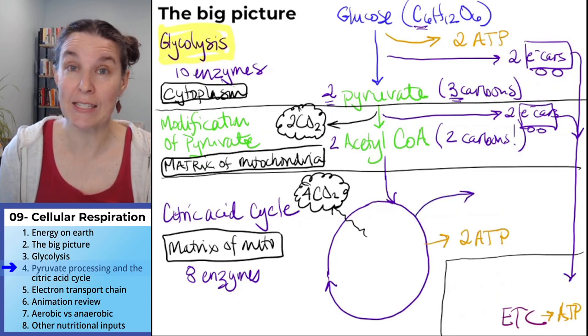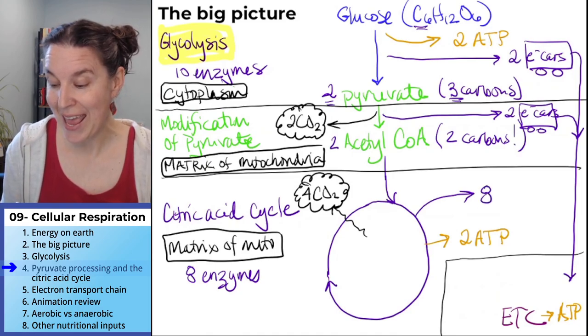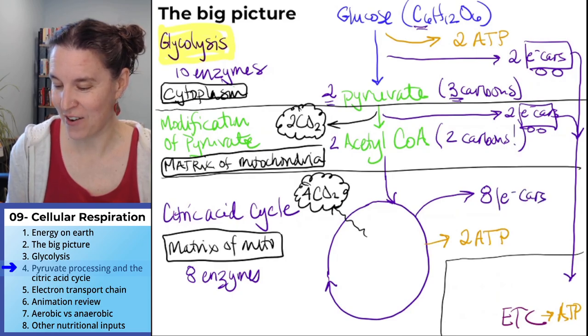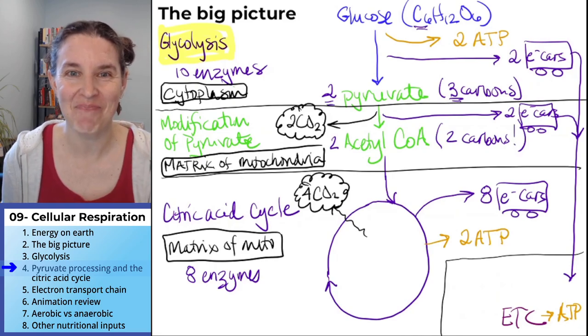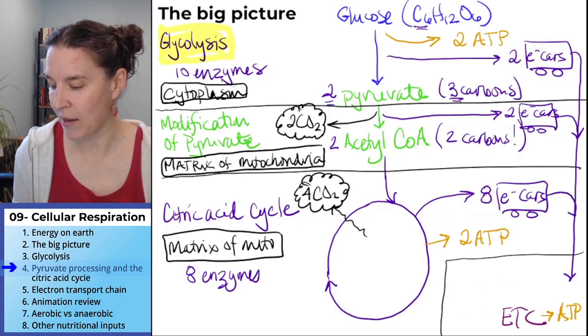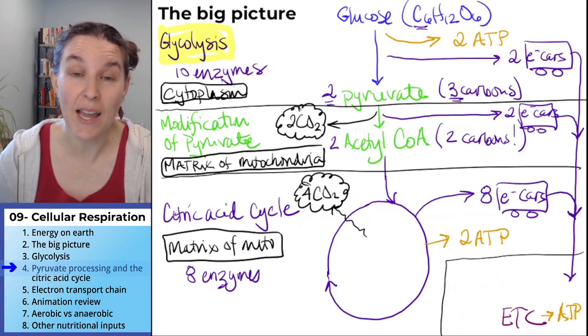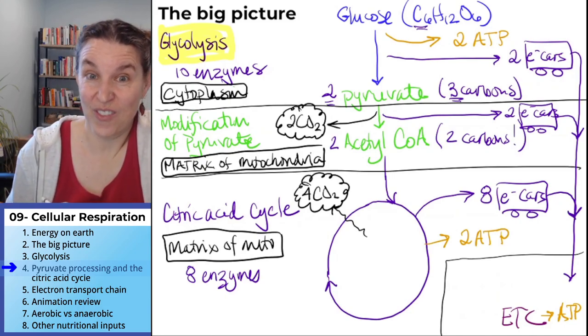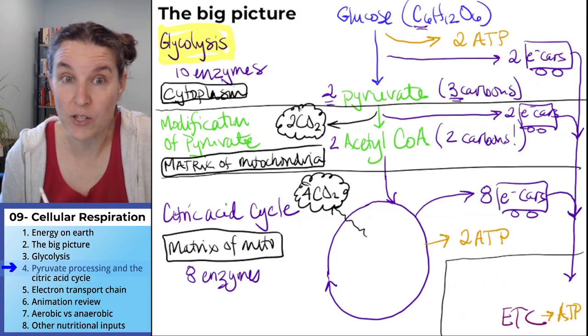What do you think we're going to get out of this? This is the big payoff. We're going to get eight more electron carriers with their wheels intact. And what do they do? They hop on the highway to the electron transport chain. Count them up. We have 12 electron carriers now that are heading to the electron transport chain. This matters. We're super interested in this.